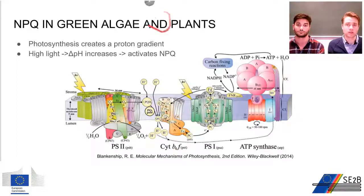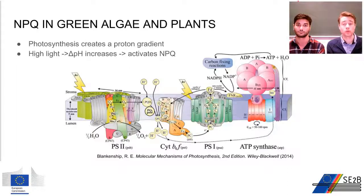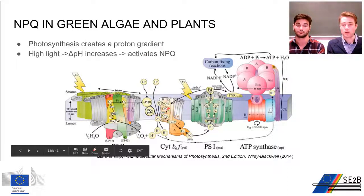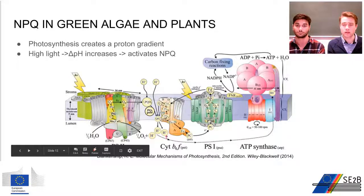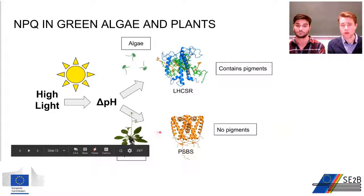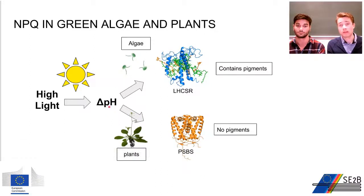NPQ in plants and green algae is a little bit different. In photosynthesis we get a proton gradient across the membrane. However, in high light this proton gradient is increased because the photosystems are constantly active. This increased proton gradient — delta pH — is actually the activator of non-photochemical quenching. So if we have high light, we get an increased delta pH and activation of NPQ.